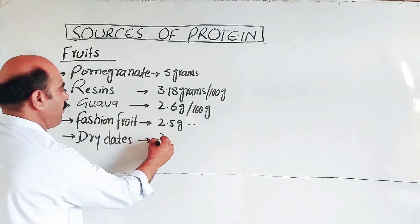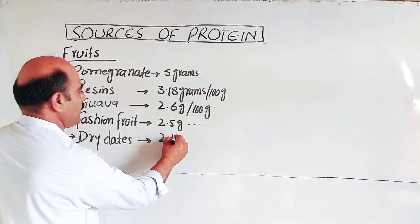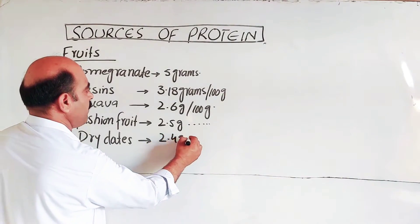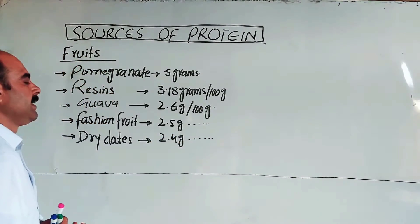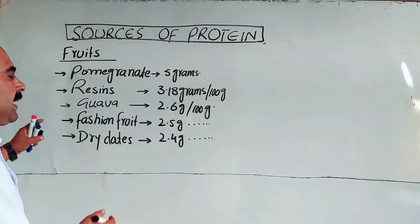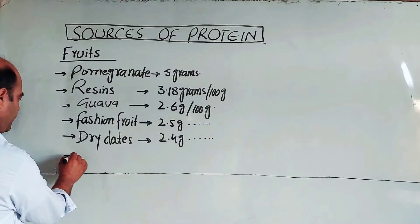Dry dates contain 2.4 grams of protein per 100 grams.